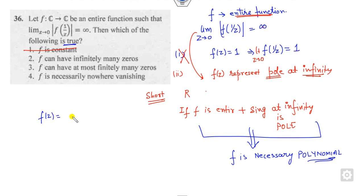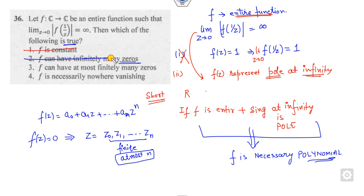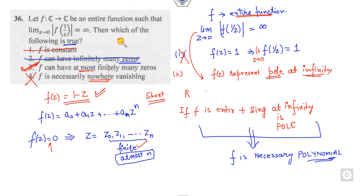Since F is a polynomial, it has at most n zeros, which are finite. Option B says 'at most finitely many zeros' — that is correct. Option C says 'infinitely many zeros' — cancelled. Option D says 'F is nowhere vanishing' — that is false because a polynomial has zeros. So the right answer is B.